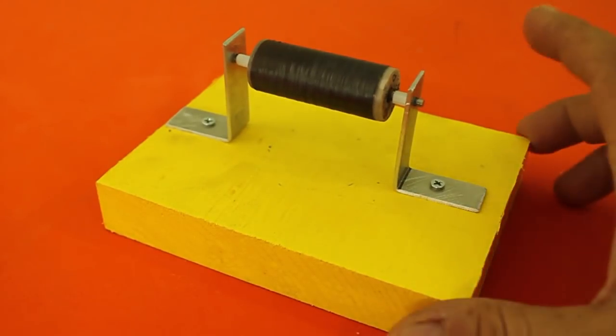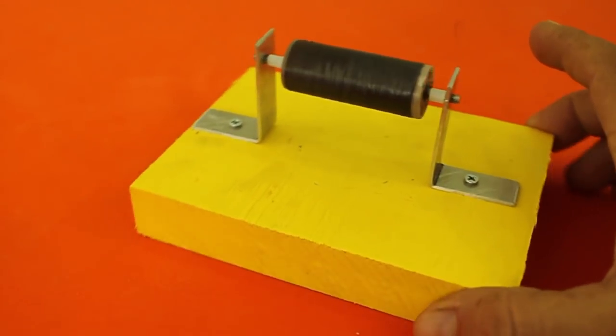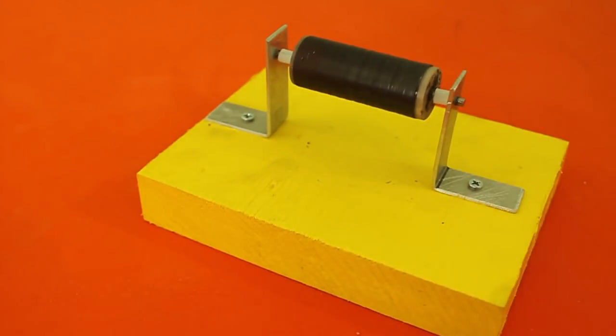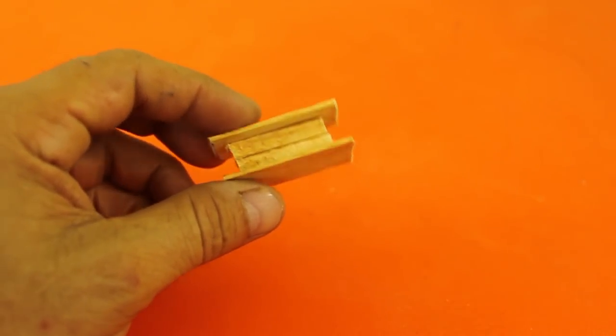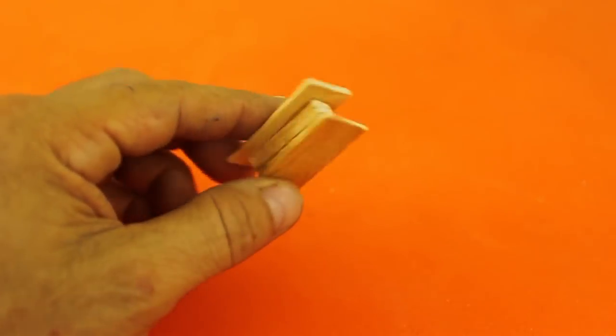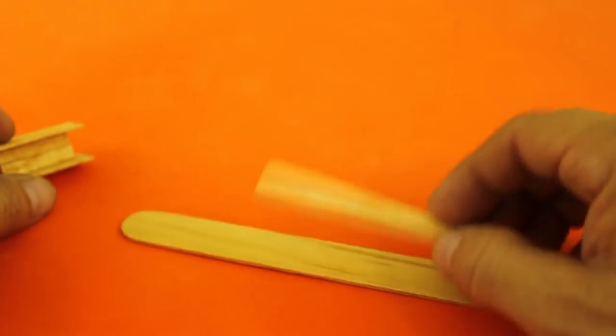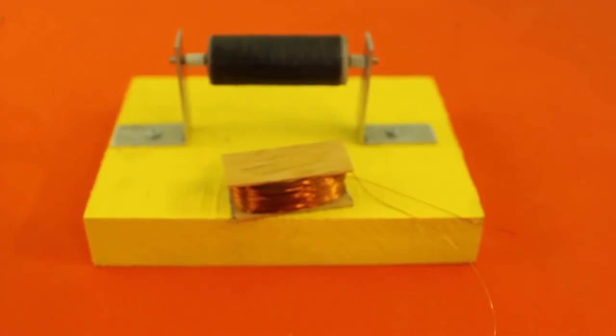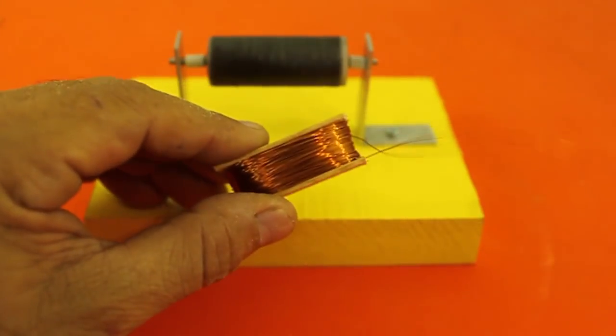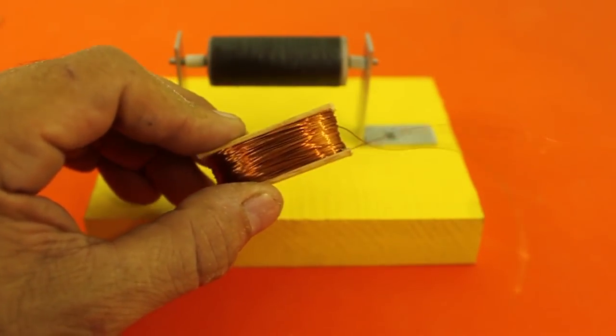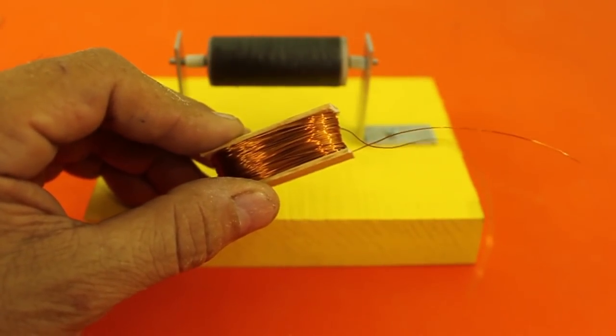Here we can see the rotor mounted on a base. The coil will be made on this wood former that I made with some wood sticks. Here it is, 400 turns of magnet wire size 30 AWG.